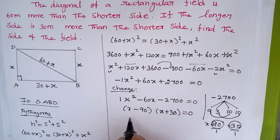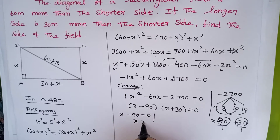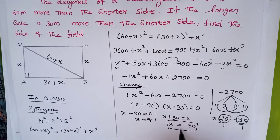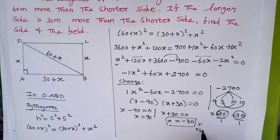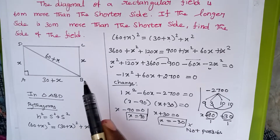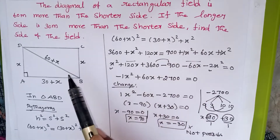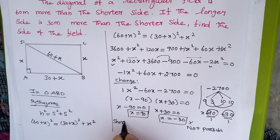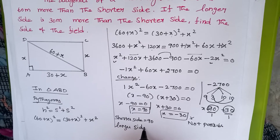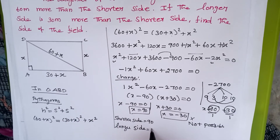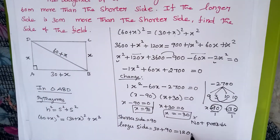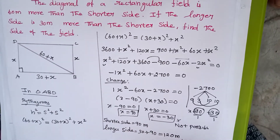Setting each factor to zero: x − 90 = 0 gives x = 90, and x + 30 = 0 gives x = −30. Since the length of any side cannot be negative, x = −30 is not possible. So x = 90. Since x is the shorter side, the shorter side is 90 meters. The longer side is 30 + x = 30 + 90 = 120 meters. So the sides of the field are 90 m and 120 m.